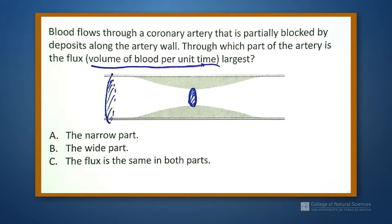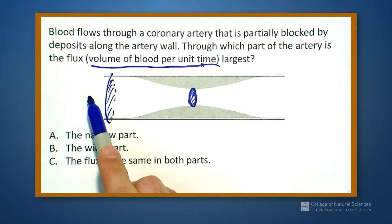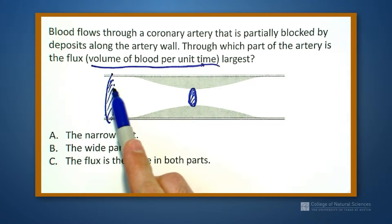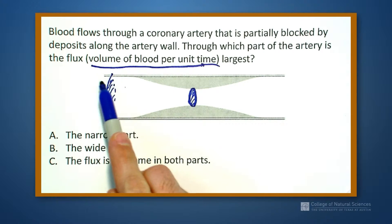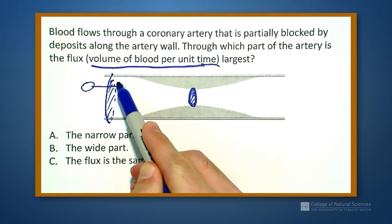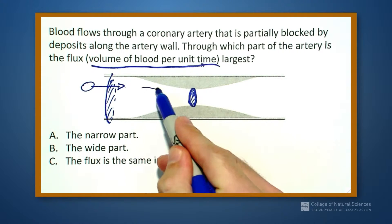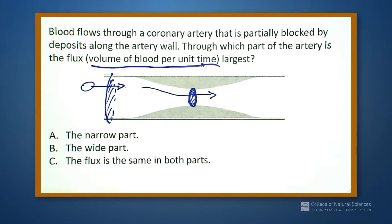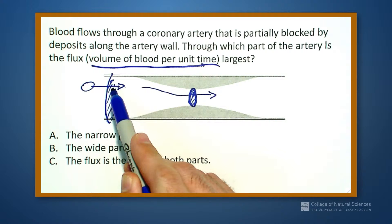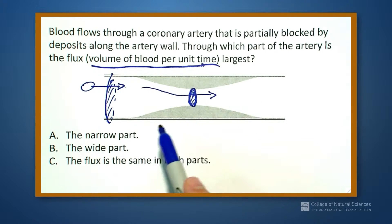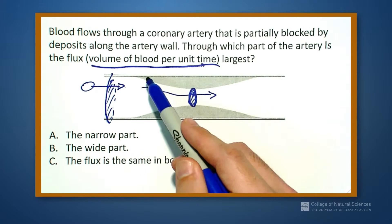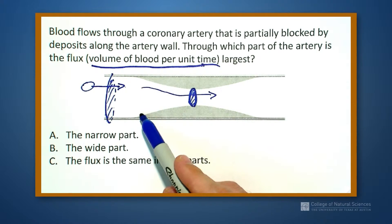If we think about what happens when one red blood cell flows in here, that red blood cell eventually is going to have to flow out as well. For every one red blood cell that flows in, one has to flow out — otherwise we'd start to build up blood cells here.